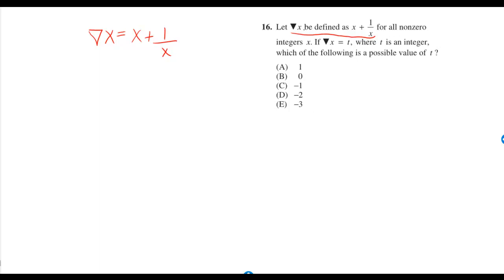The part I underlined in red can be written as weird symbol x equals x plus 1 over x. If weird symbol x equals t, and it's also equal to x plus 1 over x, then x plus 1 over x equals t.